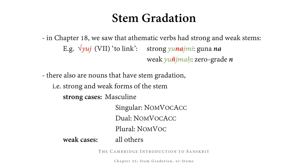The strong stem was used in the singular; the weak stem was used in the dual and plural. Now there also are nouns that have stem gradation, i.e. that have strong and weak forms of the stem. We talk about strong cases and weak cases. Strong cases are present in the masculine: the first three cases of the singular (nominative, vocative, accusative), the first three cases of the dual, and the first two cases of the plural (nominative and vocative). Weak cases are all others.